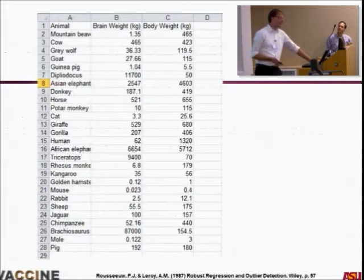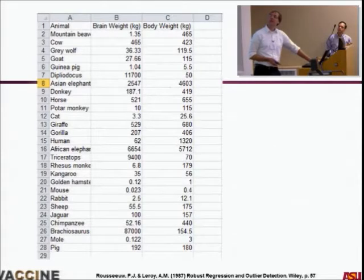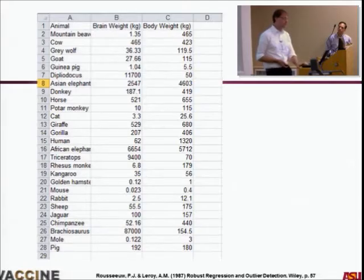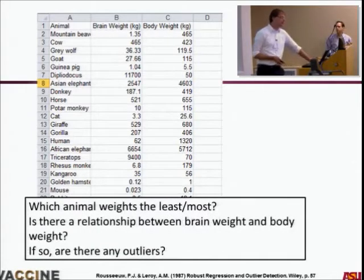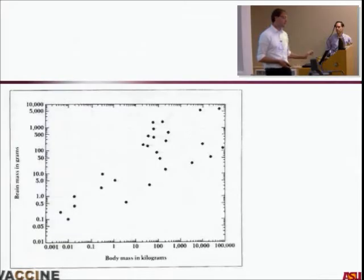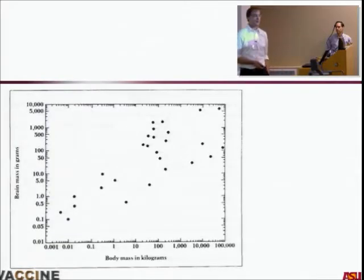A nice example is an Excel table of animal brain weight and body weight. If I want you to tell me which animal has the highest brain-weight-to-body-weight proportion, you need to scan through all the data. So one thing I might do is make a picture of the data to answer questions about which animal weighs the least and the most, whether there's a relationship between brain weight and body weight, and if there are any outliers. The interactive portion: where do you think humans are on this picture?